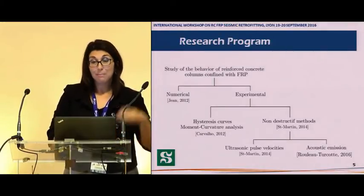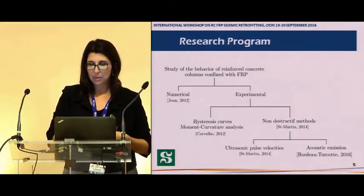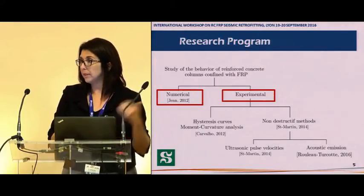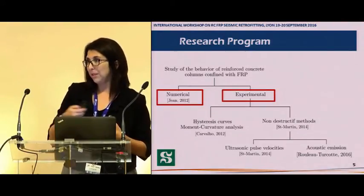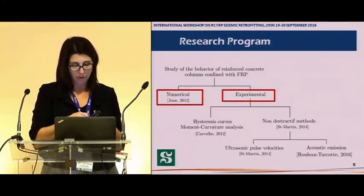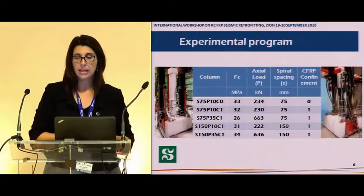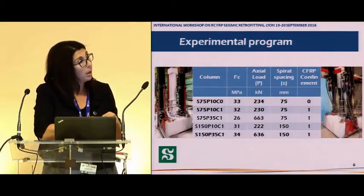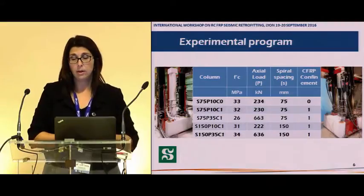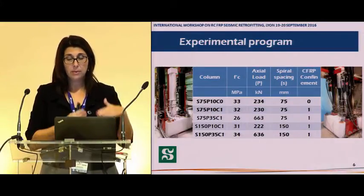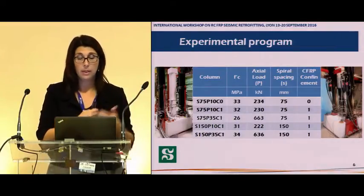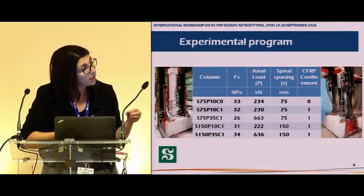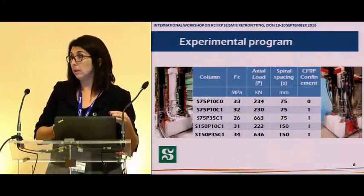This research program started back in 2012 with an experimental program. I was here in 2013 to present this part of the project to the working group with Emmanuel. We tested five columns and the parameters used were the confinement with CFRP. We had one unconfined column and four others confined with one layer of CFRP. The spacing of the spirals varied from 75 millimeters to 150 millimeters.